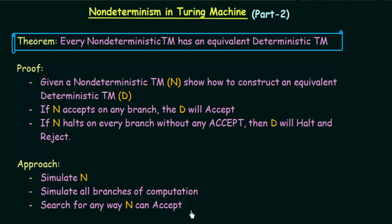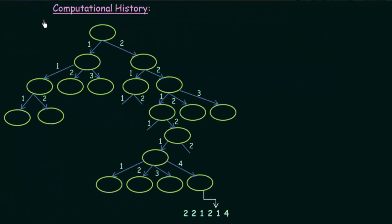Let us look at the computational history of a non-deterministic Turing machine to understand how we can accomplish this task. Here we have an example of the computational history. These bubbles represent the configurations of each step that is happening. In non-deterministic Turing machines, since there are different possibilities for even a single input, we have many branches, and hence the computational history turns out to be a tree.